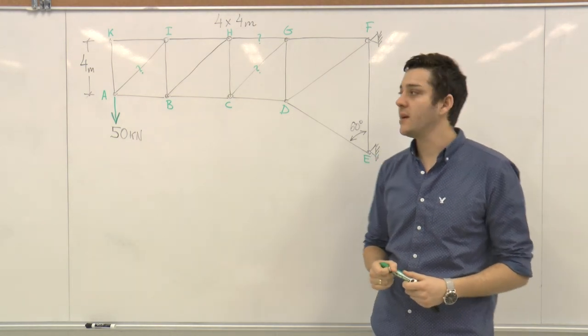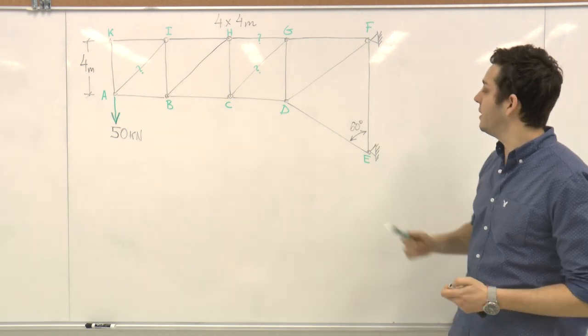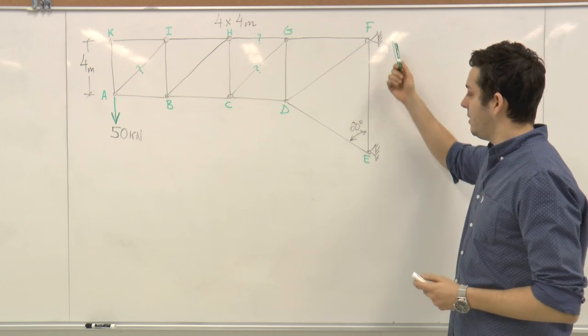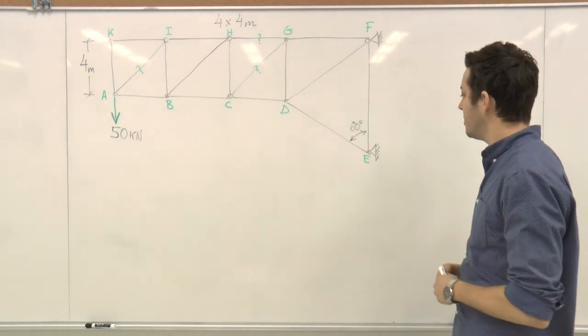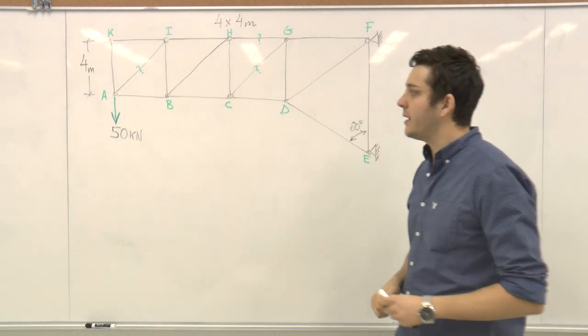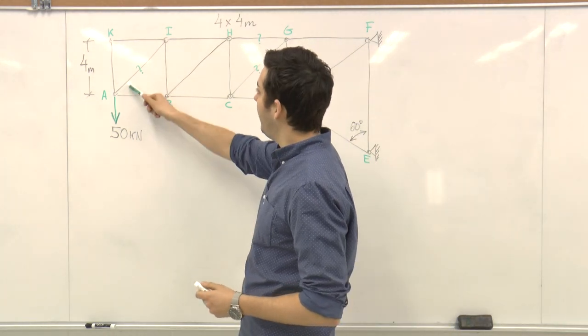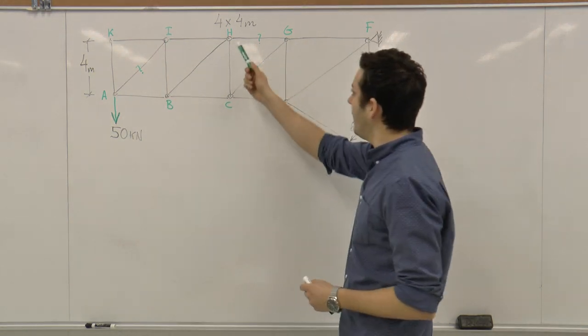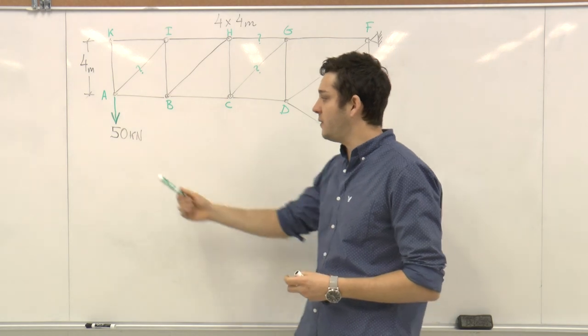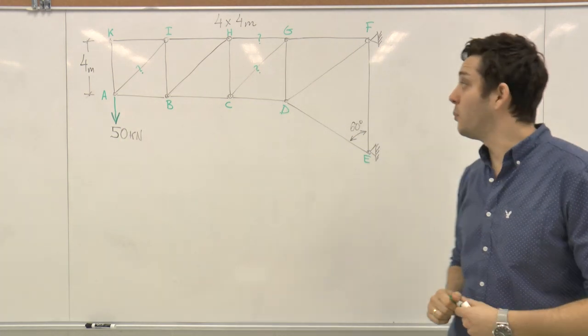Here we have a truss which is supported at points F and E. In each of the points we have two reactions, X and Y, and we need to find three truss members: AI, HG, and CG, when 50 kN is applied at point A.